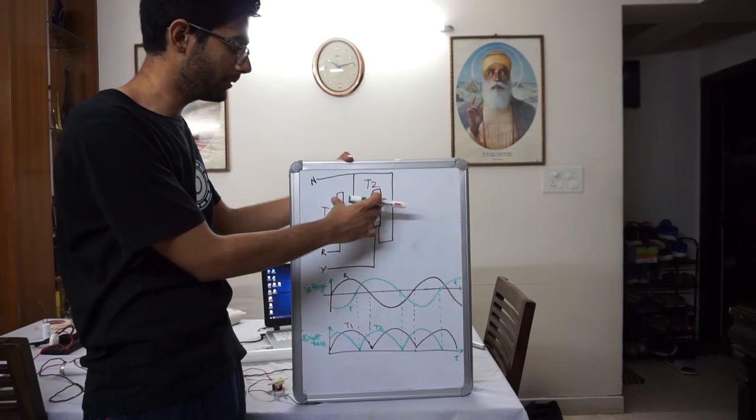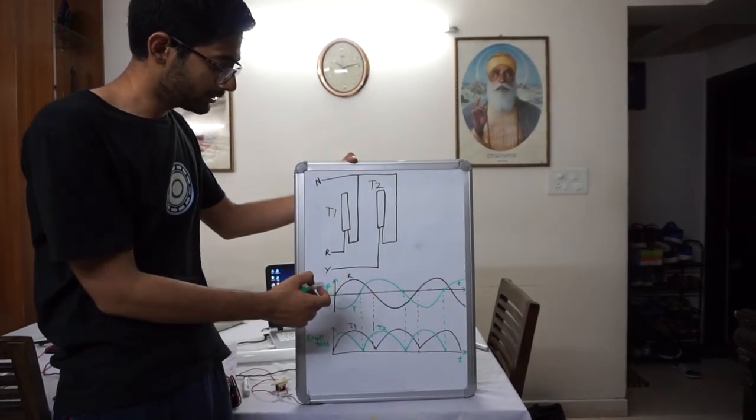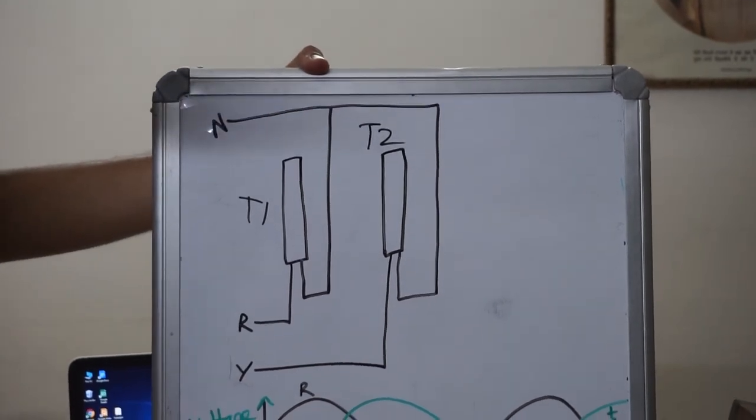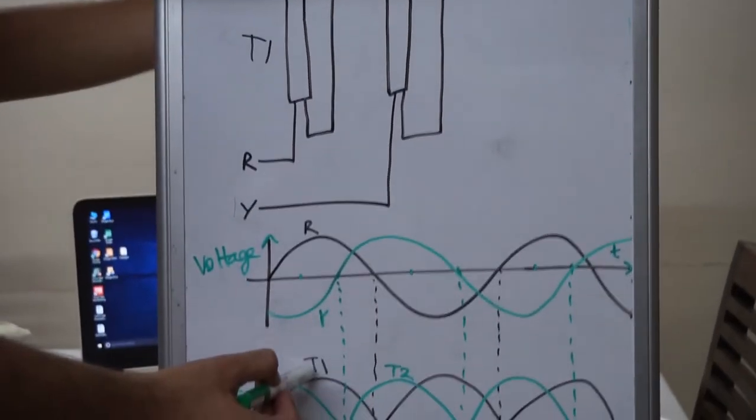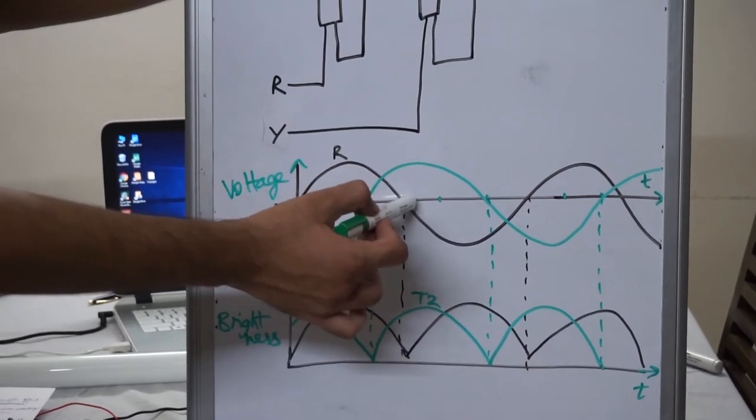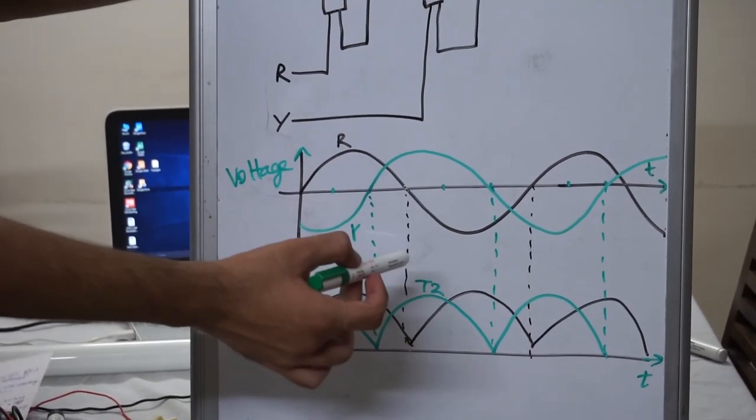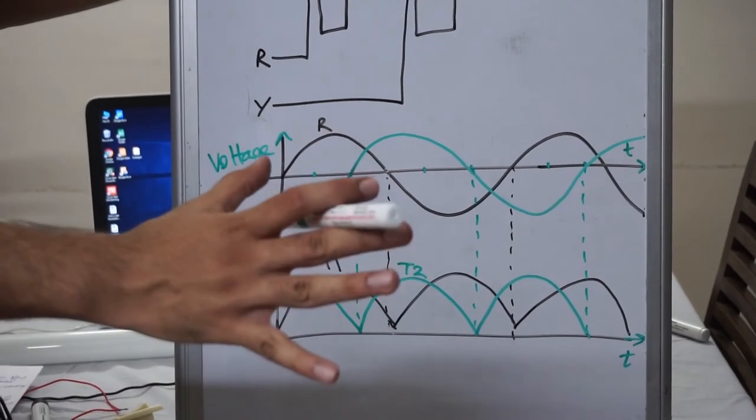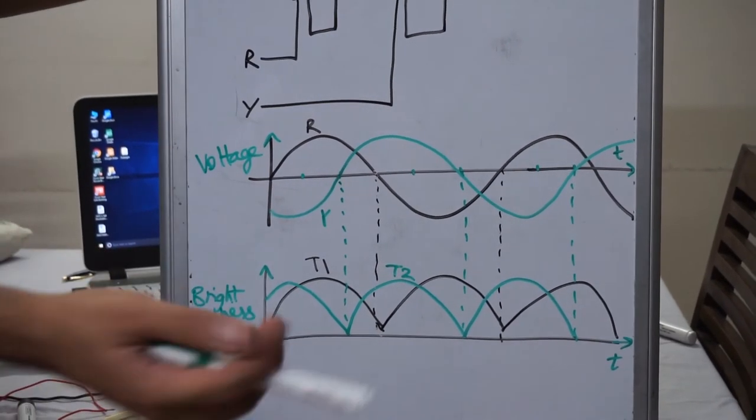Connecting adjacent tube lights to different phases so that the net brightness is not zero at any point of time. Even when the brightness due to T1 is zero when the R phase voltage is zero, the brightness of T2 is not zero, so the net brightness will not be zero and the stroboscopic effect will be greatly reduced.